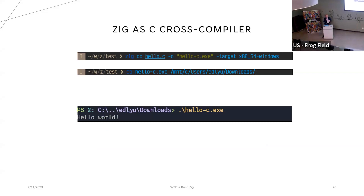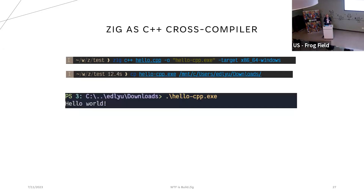One of the powers of ZIG is that it allows cross-compilation without downloading a lot of stuff. I have a Windows laptop and I run Linux on WSL. On WSL, I'm able to cross-compile for Windows, pass the binary to Windows, and run the Windows program. Same thing with C++. There are about 60 different targets for libc — it actually includes libc in the implementation, so you don't even need to use the system's libc at all. You can compile to about 60 different targets that have libc already built in.